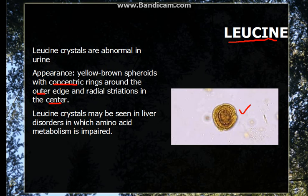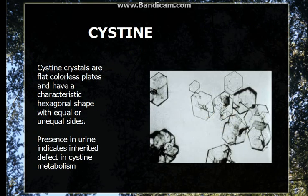Leucine crystals can be seen in amino acid metabolism disorders. Now going to cysteine crystals — they are colorless plates, hexagonal in shape, with some having equal sides and some having unequal sides. They are present in cases of cystinuria or any hereditary metabolic disorders involving cysteine metabolism.